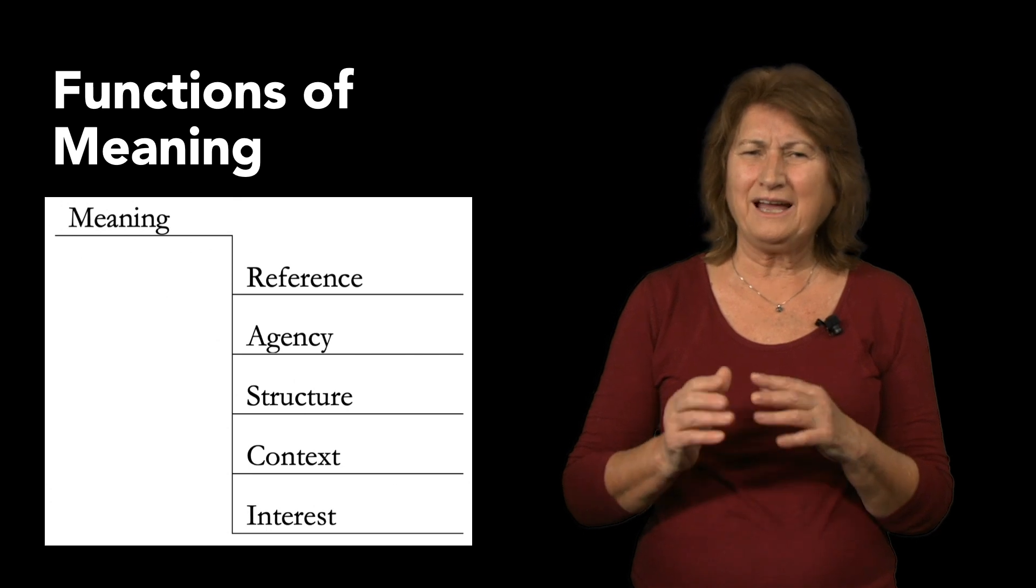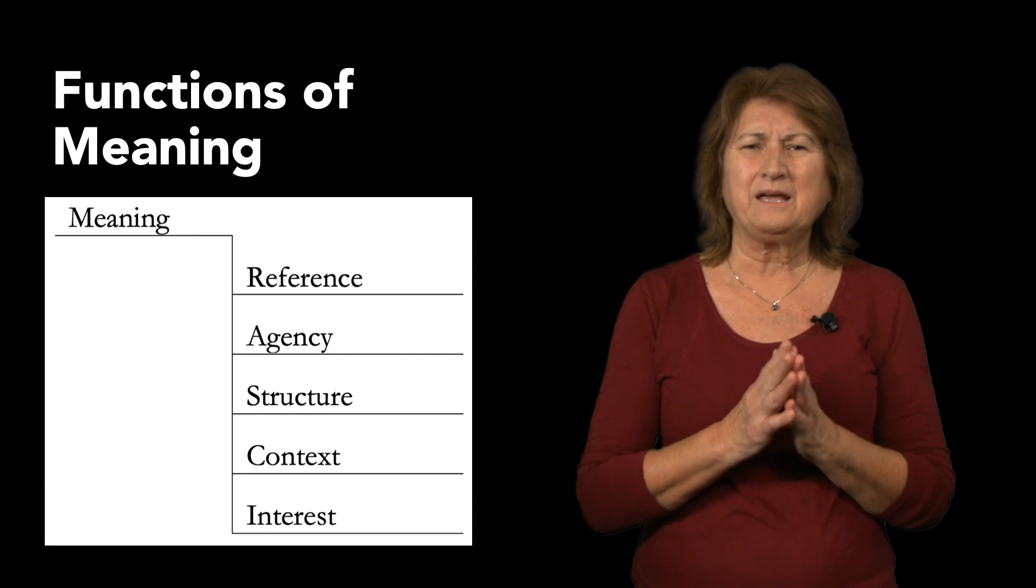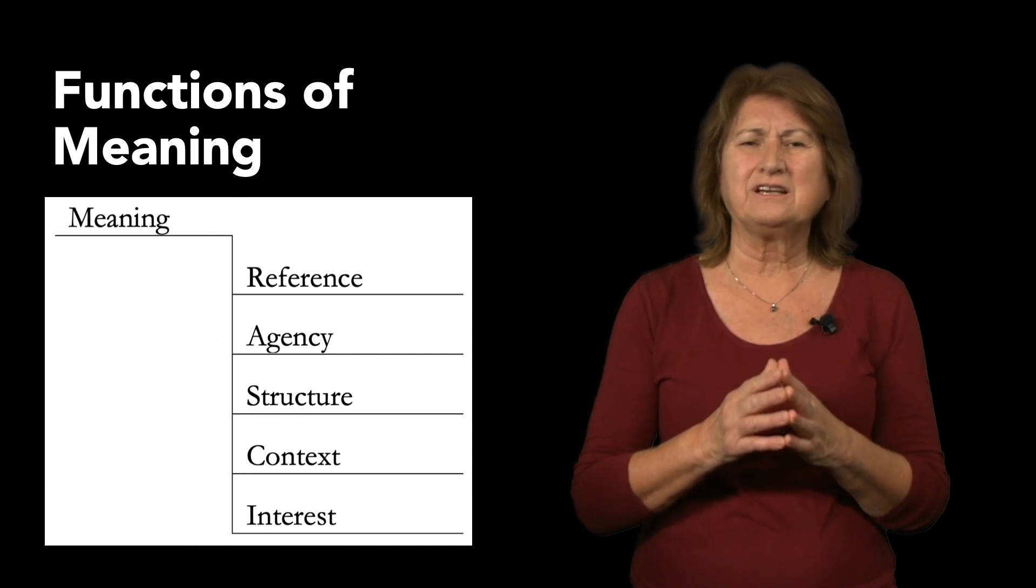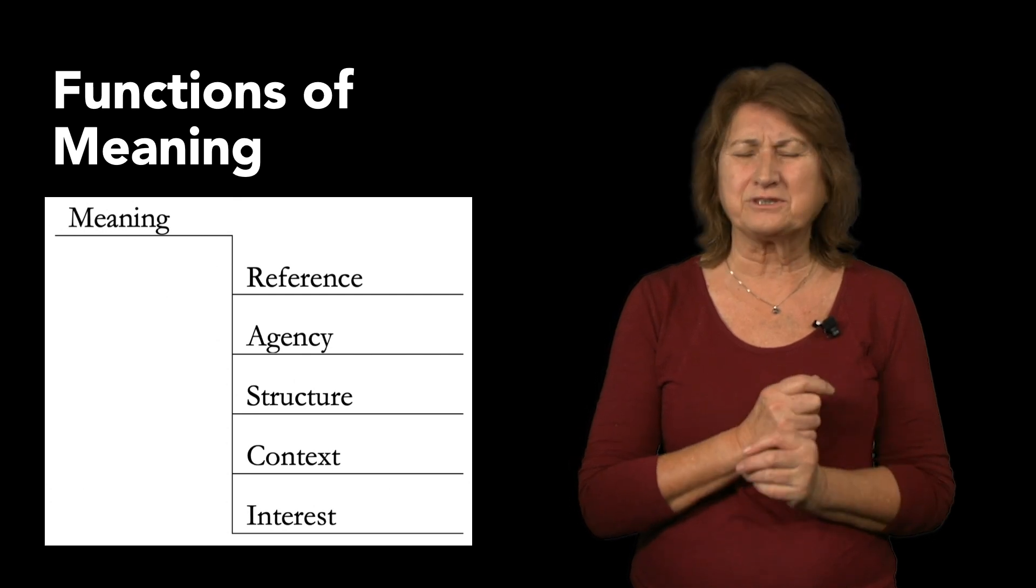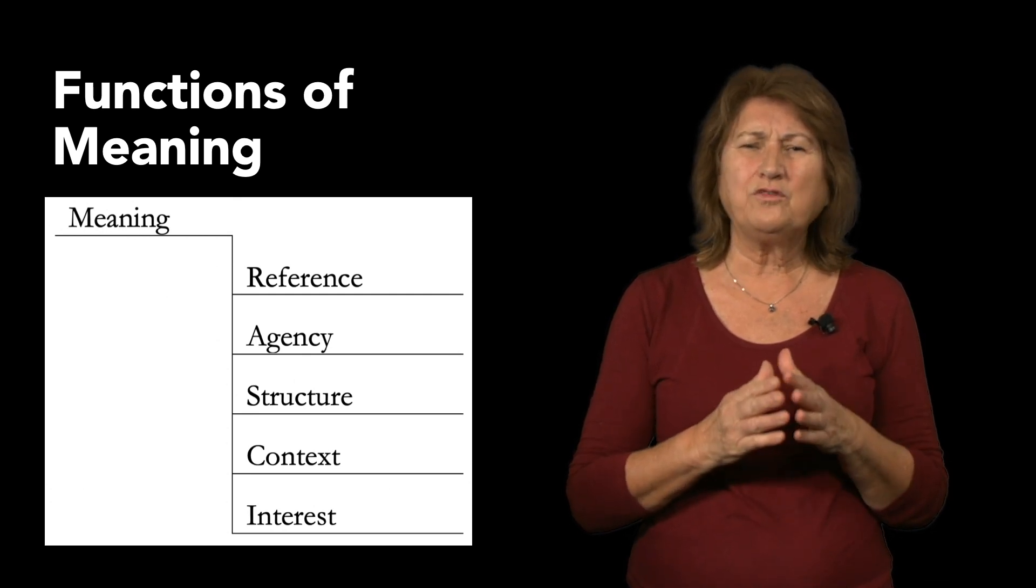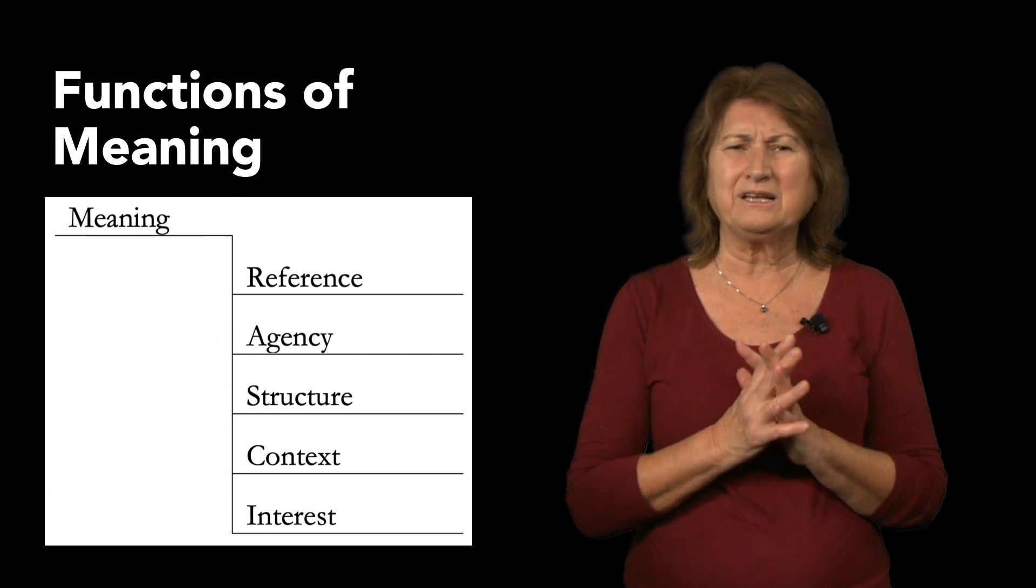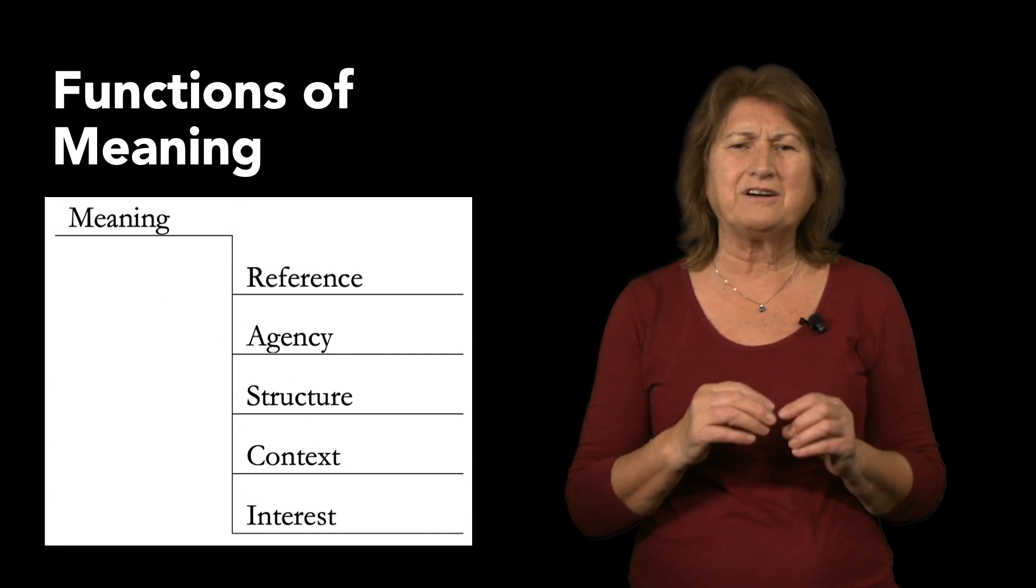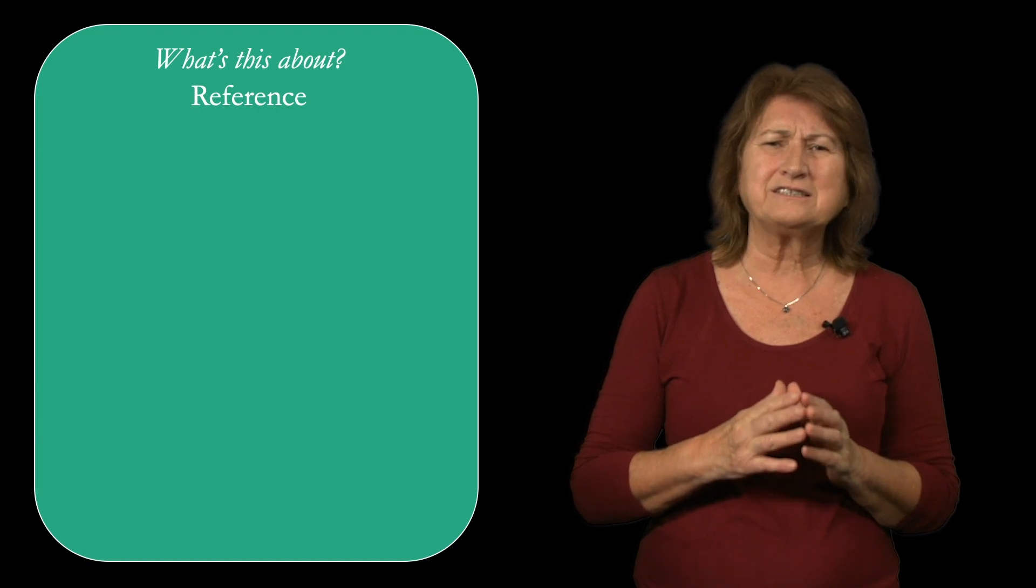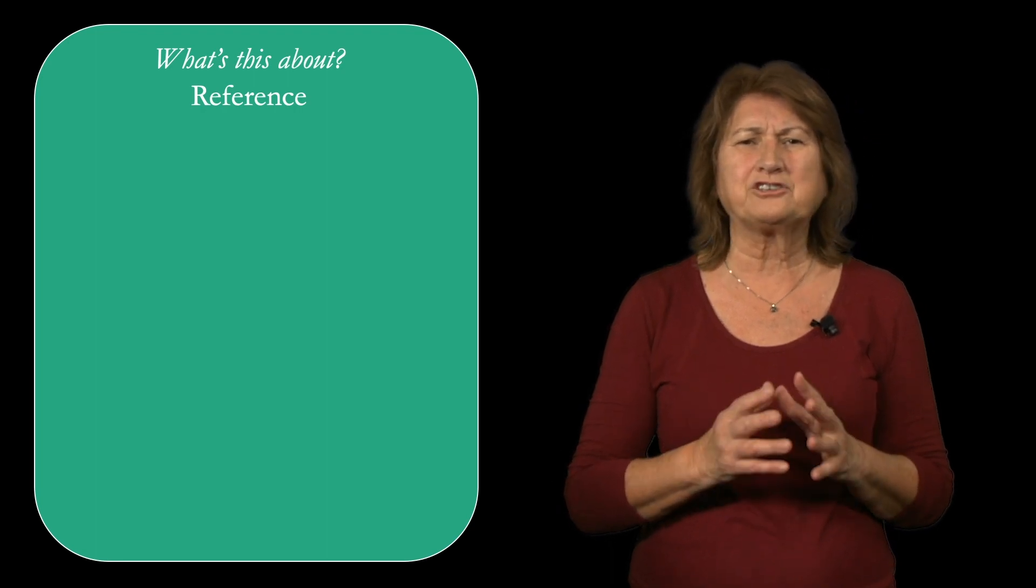If the forms are how meaning happens, then the functions are what meaning does. We propose five functions: reference, agency, structure, context, and interest. All five of these things are always happening in every meaning, even if for the moment we may have our attention more focused on one function rather than another. This translates into five questions we can ask about any meaning—every meaning in any form or in any combination of forms.